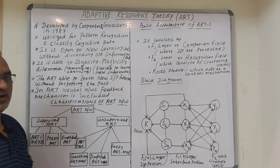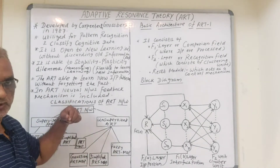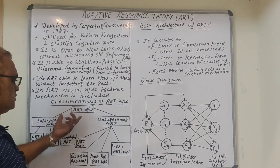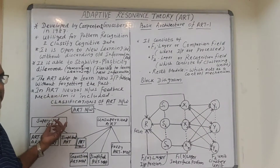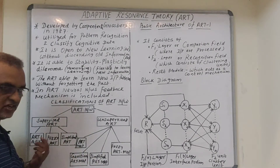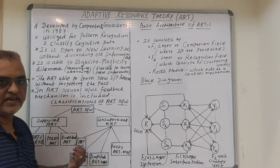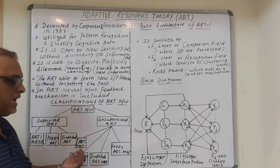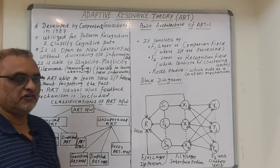ART neural networks include a feedback mechanism. The classification of ART networks is divided into two types: supervised and unsupervised. Under supervised ART we have ART 1, ART 2, Fuzzy ART, and Simplified ART. Under unsupervised ART we have ART Map, Gaussian ART Map, Simplified ART Map, and Fuzzy ART Map.